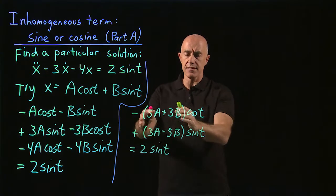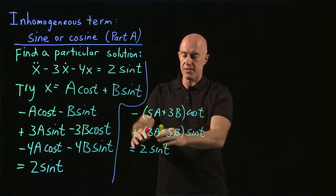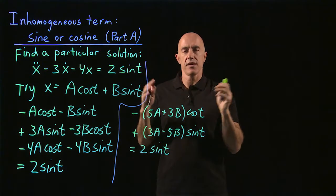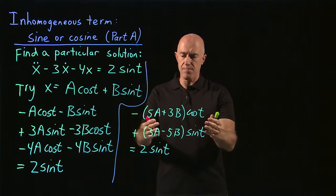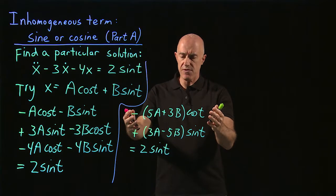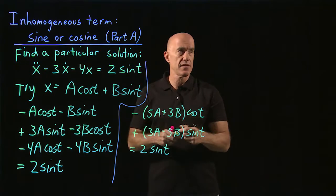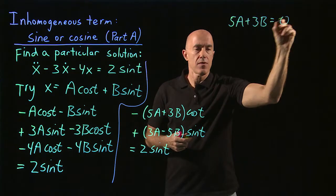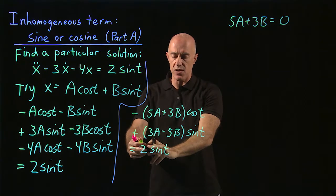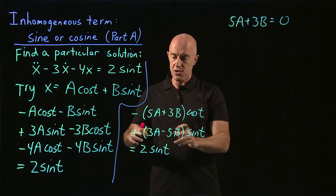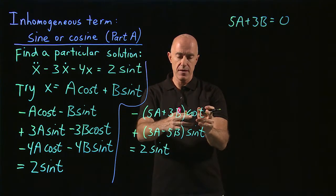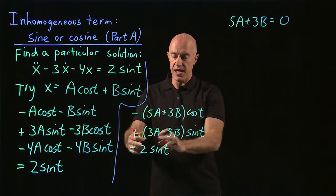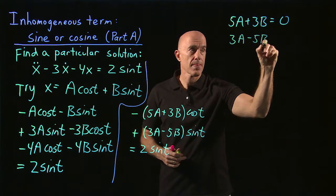When you have a constant times cosine plus a constant times sine equals a constant times cosine plus a constant times sine, you can equate the constants multiplying the cosine and equate the constants multiplying the sine. You can see that by putting t equals 0 — sine 0 is 0, cosine 0 is 1 — so we get negative 5a plus 3b equals 0. And putting t equal to pi over 2 — cosine pi over 2 is 0, sine pi over 2 is 1 — we get 3a minus 5b equals 2.